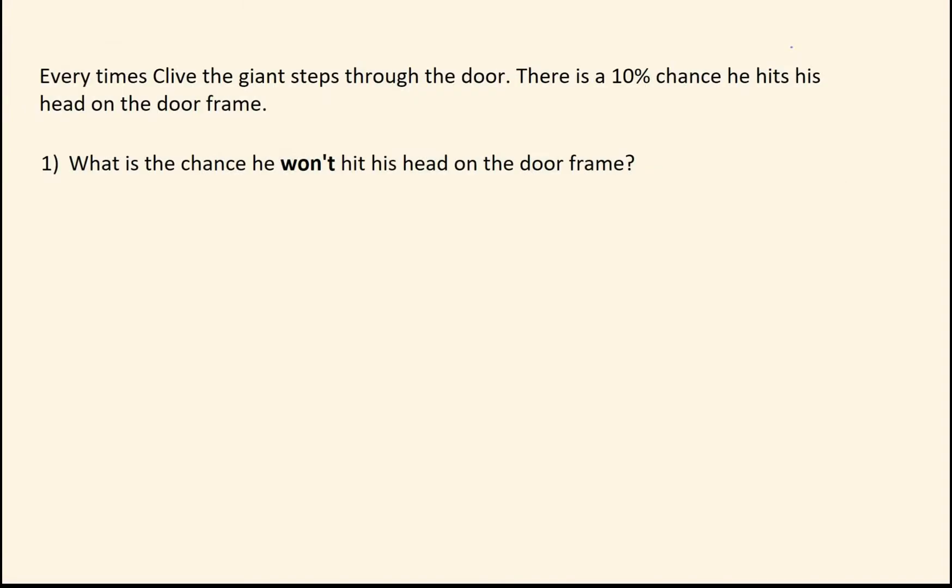So the idea is, say we've got this type of question. Every time Clive the Giant steps through the door, there's a 10% chance that he hits his head on the door frame. So therefore the odds that he won't hit his head is going to be 90%. We know this because the probability will always add up to 1 or 100%, because he'll either hit his head or won't hit his head. There's no in-between option.